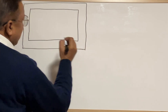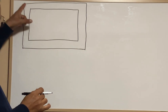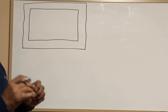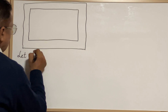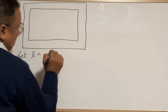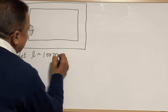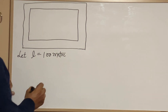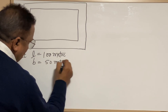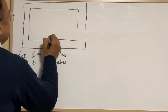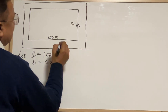We are going to discuss it by a special method to find the outer perimeter and area of this rectangular figure. Let L equal to length — that is the length of the interior figure — which means 100 meters. That is our supposition. Breadth is equal to 50 meters.